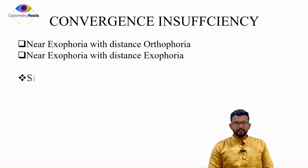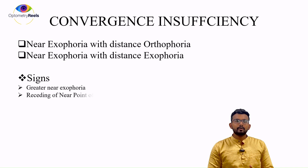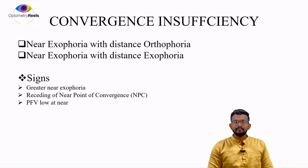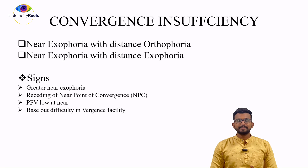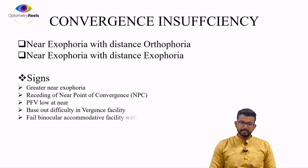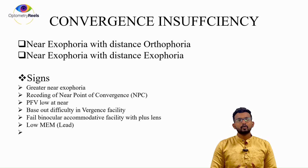Coming to the signs of convergence insufficiency: the patient will be having high exophoria for near, and there will be a receding NPC. Positive fusional vergences — done with base-out prisms — will have less value. In vergence facility there will be base-out difficulty. For accommodation parameters, there will be all plus-lens difficulties. In binocular accommodative facility they will have plus-lens difficulty, there will be low MEM — meaning the MEM is going to lead — and a low NRA.